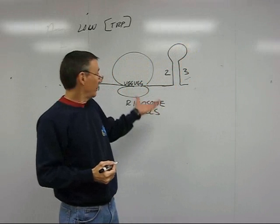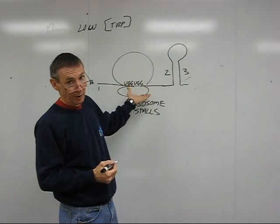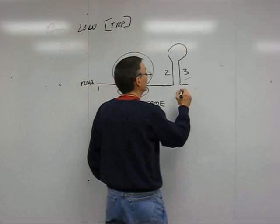Region 3 is transcribed. 2 and 3 can pair because the ribosome is still back in region 1, sitting around waiting for tryptophan transfer RNAs.